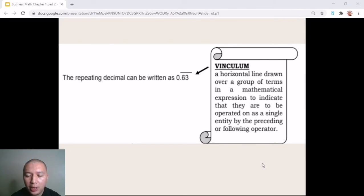A line is placed over the decimal numbers which is called the vinculum. A vinculum is a horizontal line drawn over a group of terms in a mathematical expression to indicate that they are to be operated on as a single entity by the preceding or following operator. So the person or whoever uses the number or the answer would know that this one is a repeating decimal.